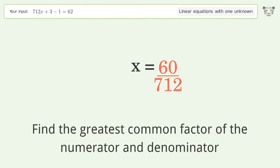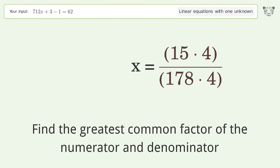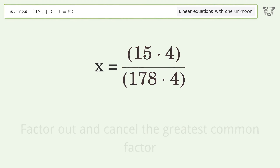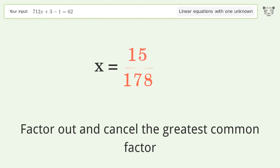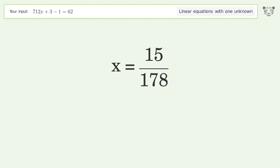Find the greatest common factor of the numerator and denominator. Factor out and cancel the greatest common factor. The final result is x equals 15 over 178.